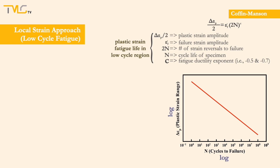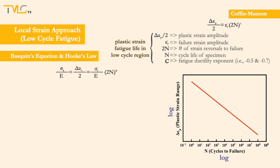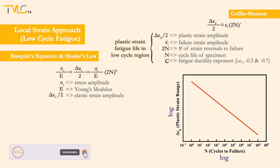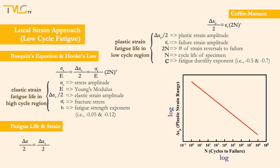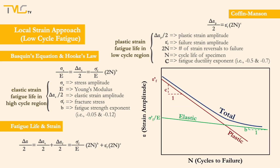This equation describes the relationship between plastic strain and fatigue life in the low cycle fatigue region. For the high cycle region, where nominal strains are elastic, Basquin's equation is rearranged and combined with Hooke's law, yielding the following equation. Here, sigma_a is the alternating stress amplitude, E is the Young's modulus, delta epsilon_e divided by 2 is the elastic strain amplitude, sigma_f is the fracture stress, and b is the fatigue strength exponent, varying between -0.05 and -0.12 for most metals. Accordingly, for the entire region combining low and high fatigue cycles, the following combined equation is obtained for fatigue life based on strain.